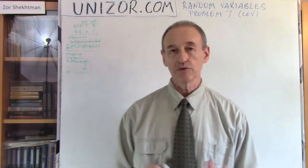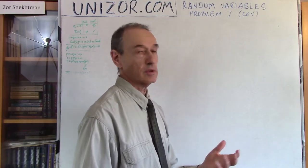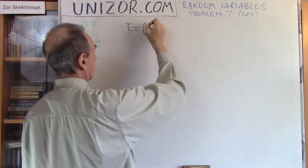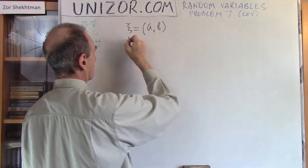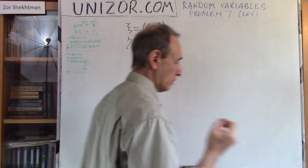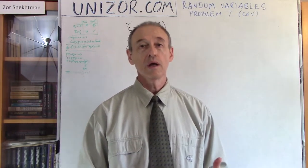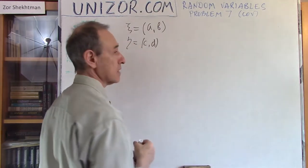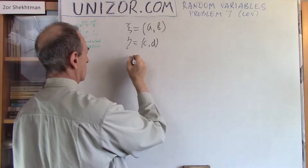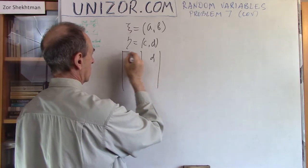Now let me present you the pure problem. Let's consider two random variables, and I was trying to find as simple variables as possible. My random variable ξ takes values A and B, and my random variable η takes values C and D. We are talking about their dependence or independence, which means we have to get involved in their mutual probabilities of taking certain values at the same time. I put it in a table, so C and D would be the values of η.